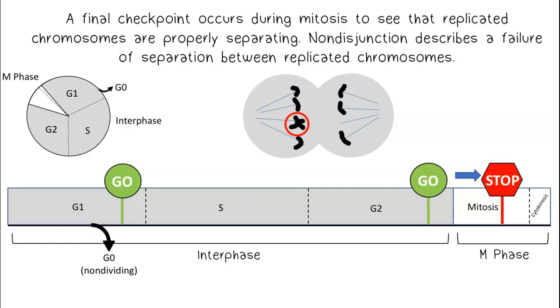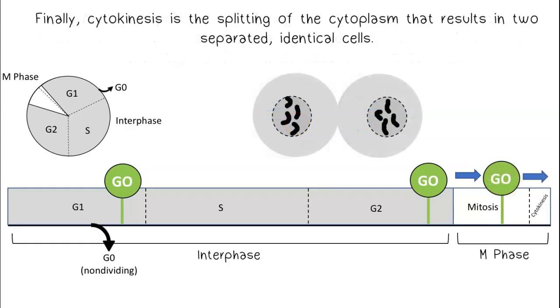Non-disjunction describes a failure of separation between replicated chromosomes. Finally, cytokinesis is the splitting of the cytoplasm that results in two separated identical cells.